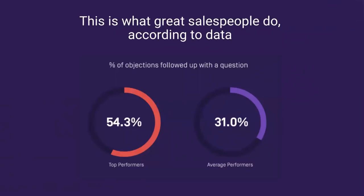Based on our data here at Gong through the analysis of over three million recorded sales conversations, we found that superstar salespeople — the top 10 and 20 percent in performance — more often respond to objections with a question of their own. Average and unsuccessful performers do that less often. The reason this is important is that objection scenarios are rife with misunderstanding, and if you don't clarify the underlying cause you may be addressing the wrong thing.